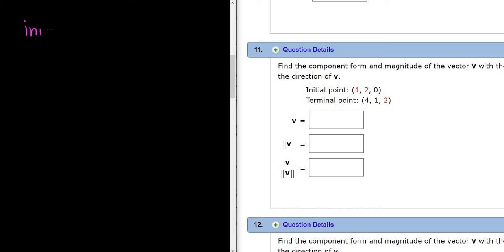So we have initial. So our initial point in this problem is (1, 2, 0). And our terminal point in this problem is (4, 1, 2). And so step 1 is to find v.